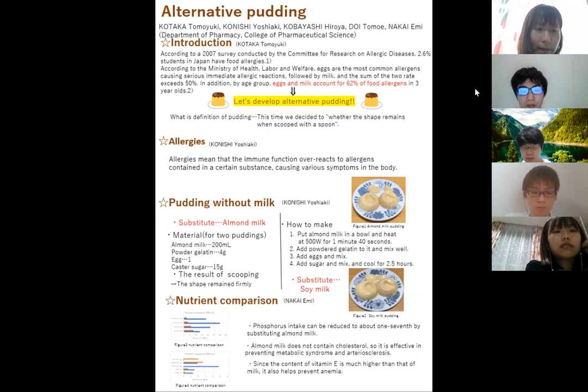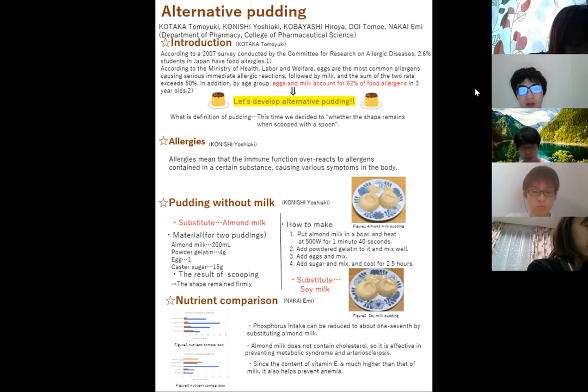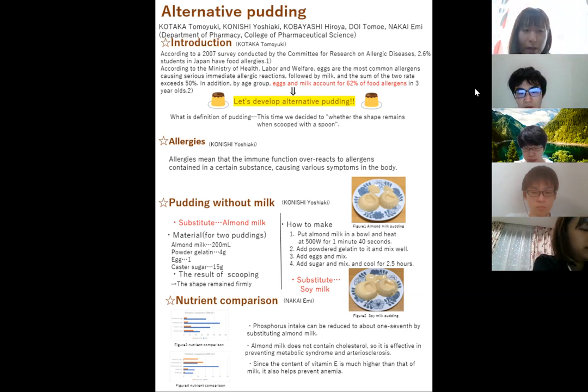In addition, by age group, eggs and milk account for 62 percent of food allergy in three-year-olds. Therefore, if children can make their favorite pudding without using eggs or milk, it can reduce the risk of life of children with allergies and the stress of their parents.